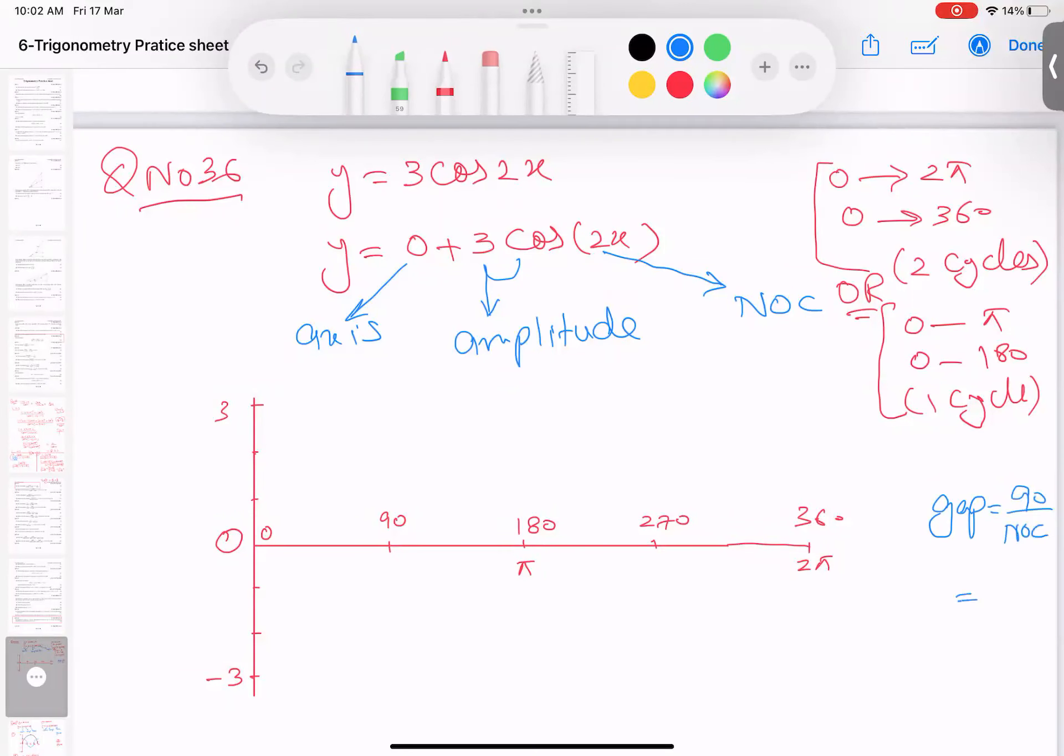So 90, NOC number of cycles, how many? 2 cycles. So I get 45 degree gap. So I should not write 90, 90 gap, no. I'll take 45 degree. 0 plus 45, plus 45, again plus 45, 135. Again plus 45, 225. Again 270, and then 315.